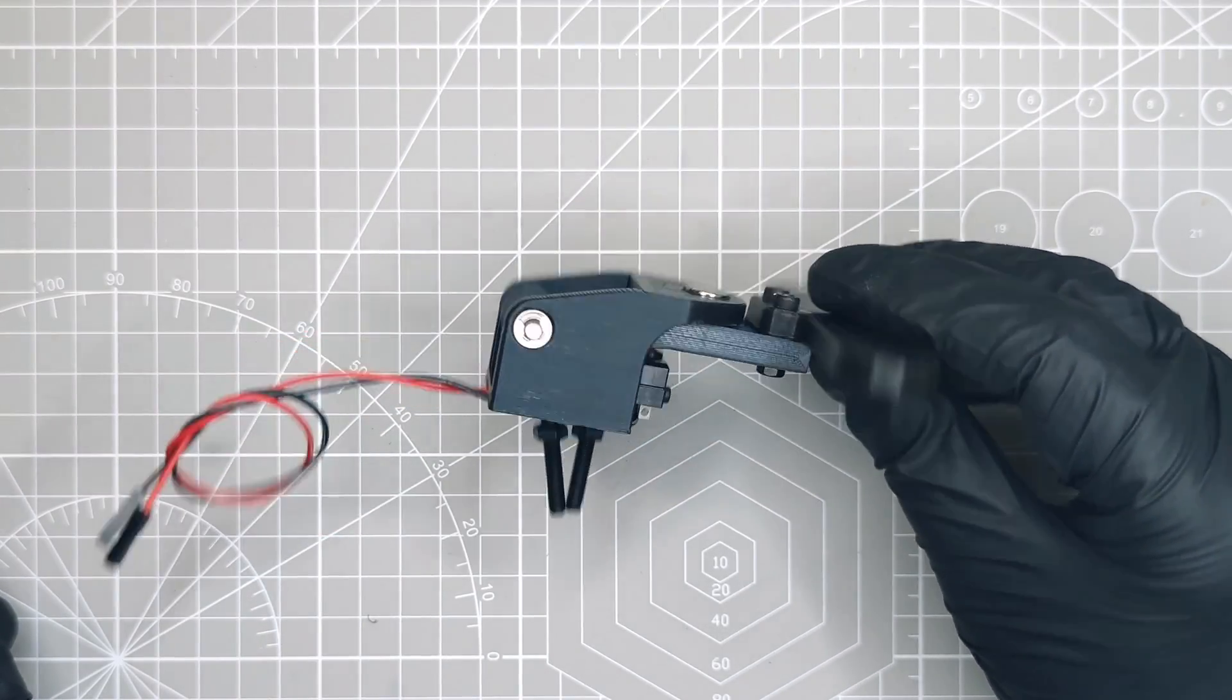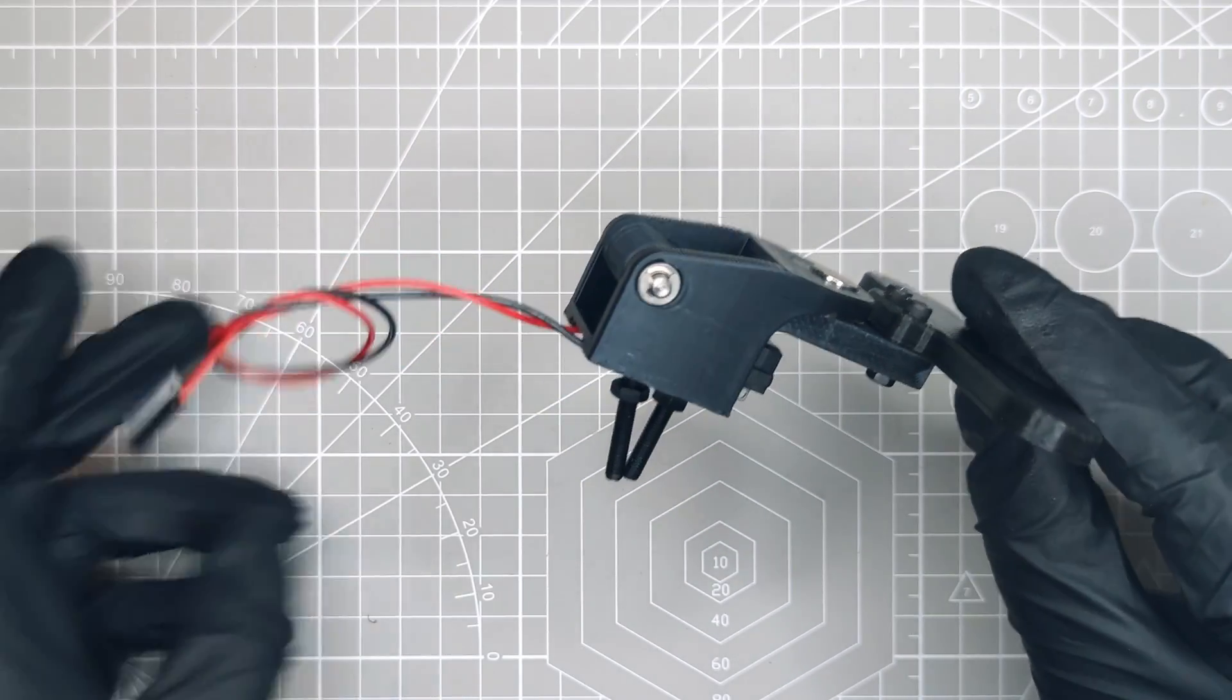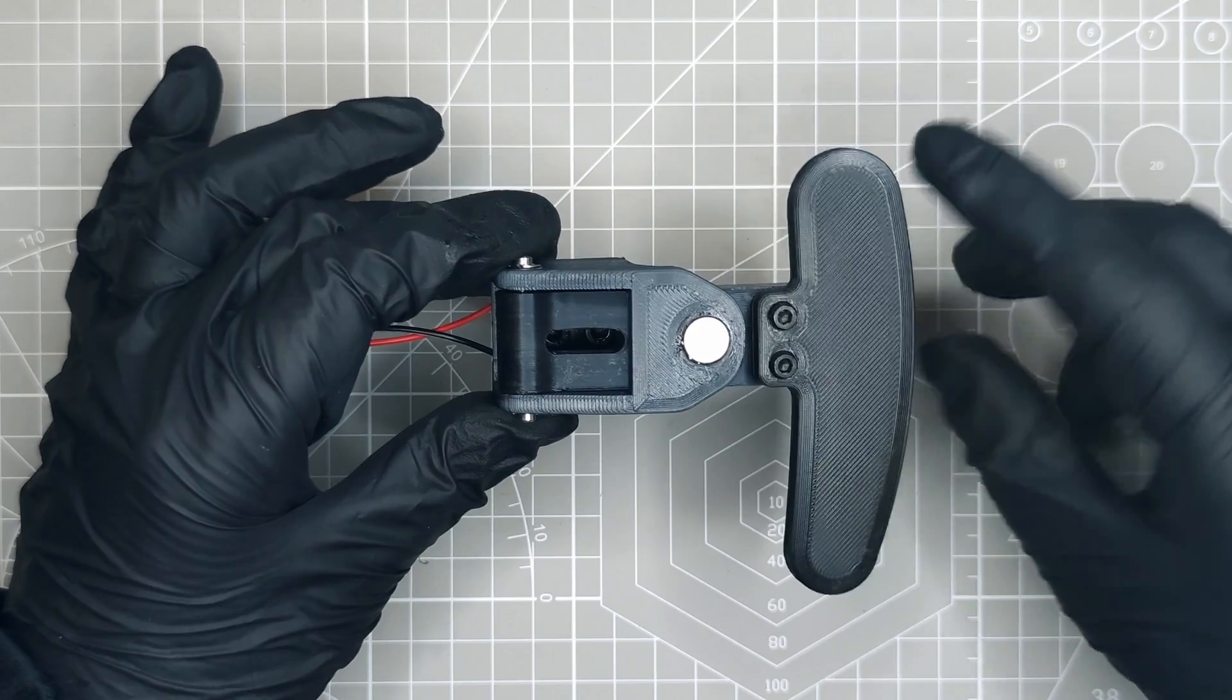I braid the wires together for now. When time comes to install the shifters on the wheel, I may use some shrink wrap to protect them. This shifter is now complete.